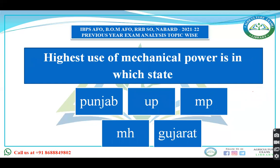Highest use of mechanical power is in which state — Punjab, UP, Madhya Pradesh, Maharashtra, or Gujarat? The highest use of mechanical power is in Punjab. When you study the Navad Norms, under the CSC section this is mentioned — highest use of mechanical power is in Punjab.